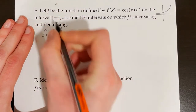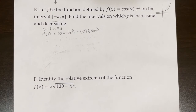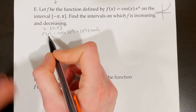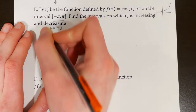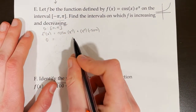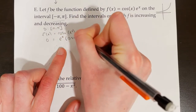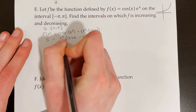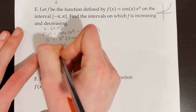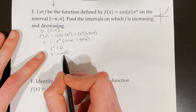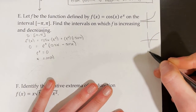Now it is time to find f prime of x using the product rule: f prime of x equals cosine x times e to the x plus e to the x times negative sine x. To find critical numbers, I set f prime of x equal to 0. Factoring out e to the x gives e to the x times (cosine x minus sine x) equals 0. Setting e to the x equal to 0 has no solution since the natural log of 0 is undefined. So I solve cosine x minus sine x equals 0, meaning cosine x equals sine x.